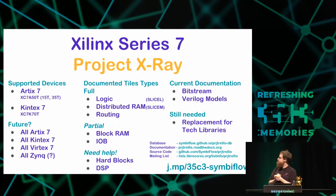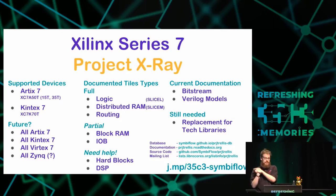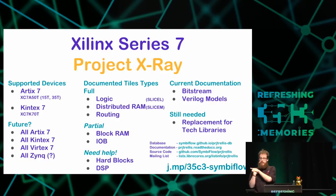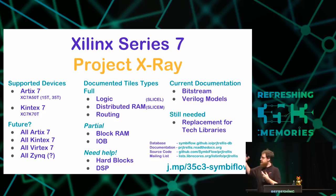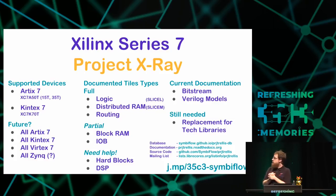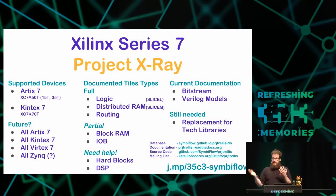This is the one everybody's probably here to talk about. I would highly recommend that if you don't have to use the Xilinx Series 7, you really consider the ECP5. For most people, the ECP5 is a viable alternative that is cheaper and better for open source use cases and is fully documented. Project X-Ray, however, is coming along really well. We're mainly targeting the Artix-7, specifically the XC7A50T, but that also includes the 35T and 15T.